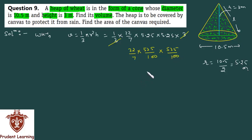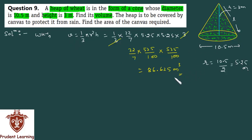The calculation part is left for you to solve. When you work it out, you will get 86.625. The unit will be meter cube, because you have found volume and the dimensions are in meters, so the unit of volume is meter cube. So we have found the volume of this heap of wheat.